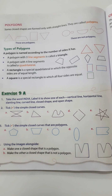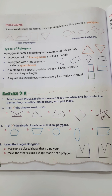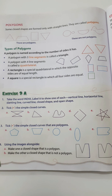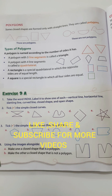Now you understand closed curves, open curves, polygons, shapes, and line segments. How many line segments a polygon has determines its particular name — all of this we covered in this video. In the next video, we are going to discuss the circle, parts of a circle, and then find the radius, diameter, and more.